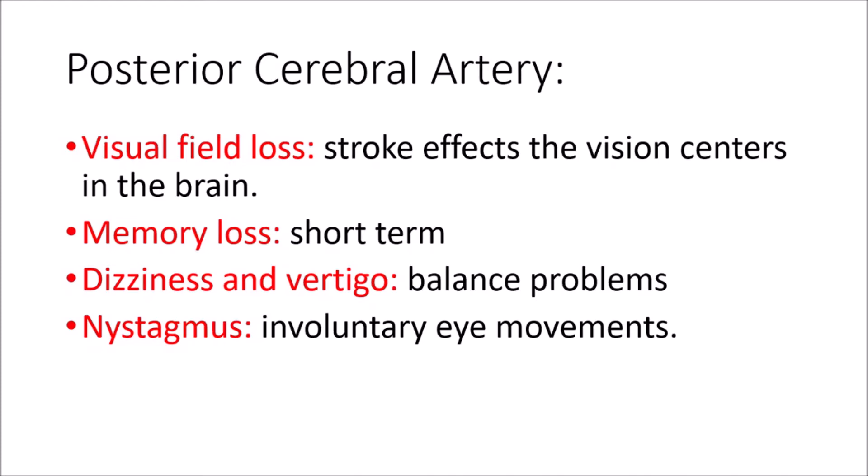The first symptom is visual field loss. The visual field is the whole area a person can see. When there is damage to the visual pathway, a person experiences visual loss. If the stroke causes visual field loss, it will affect both eyes. If the stroke has affected the right side of the brain and vision centers are affected on the right side, vision will be lost on the left in both eyes. Similarly, if the left side of the brain is affected, vision will be lost on the right in both eyes.